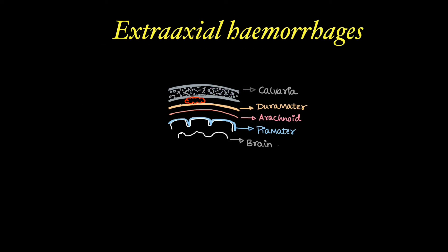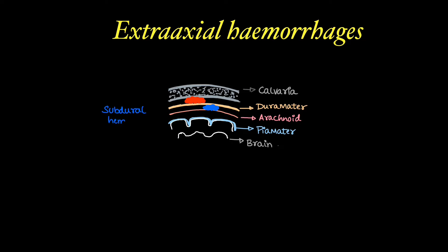Based on location, we can classify extra-axial hemorrhages as follows. If the hemorrhage is outside the dura mater, it is called extradural hemorrhage, which is between the calvaria and dura mater. If the hemorrhage is beneath the dura mater, between the dura mater and arachnoid, it is called subdural hemorrhage. If the hemorrhage is beneath the arachnoid, between the arachnoid and pia mater, it is called subarachnoid hemorrhage.